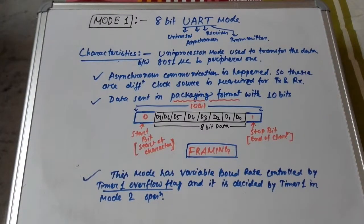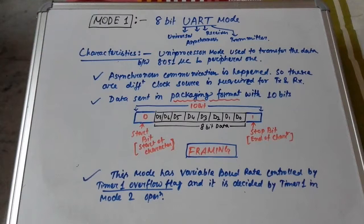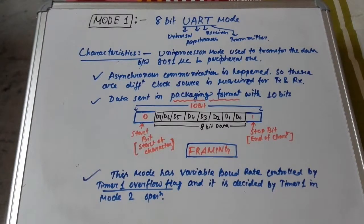Mode 1 is called 8-bit UART mode — UART stands for Universal Asynchronous Receiver Transmitter. It operates in uniprocessor mode with asynchronous communication. Data is transferred in a packaged format using the framing concept, which is specific to asynchronous communication.